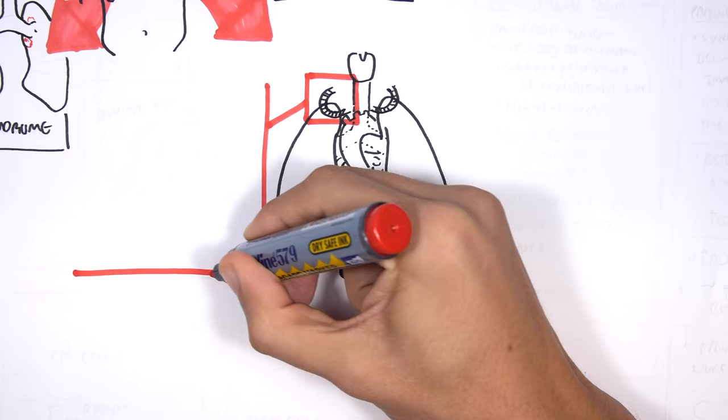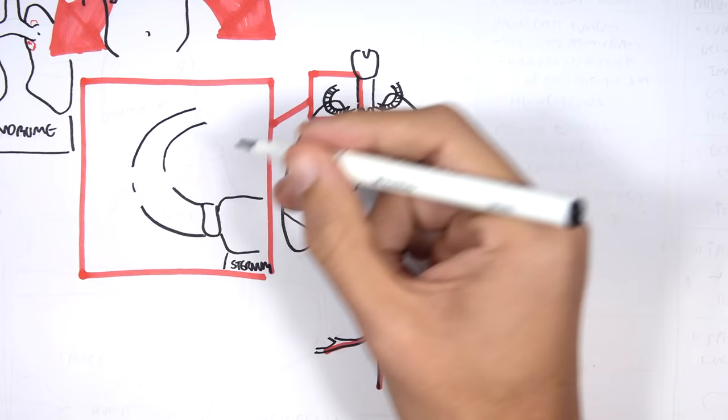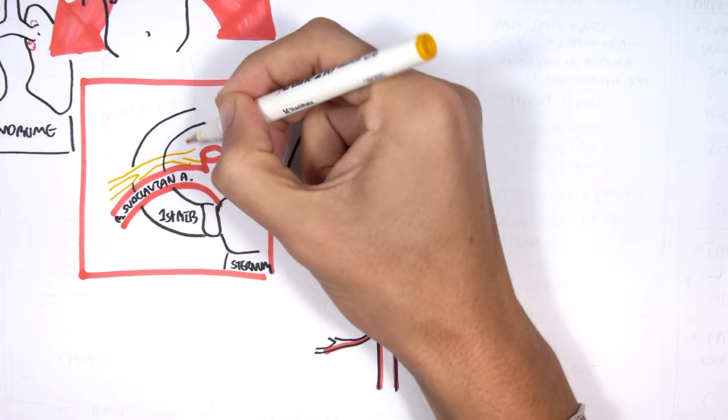Let us zoom into this first rib area and learn a bit of anatomy. So here is the sternum and the first rib. Going over the first rib are some important structures, including the subclavian artery and vein and the brachial plexus, the nerves that innervate the upper limb.